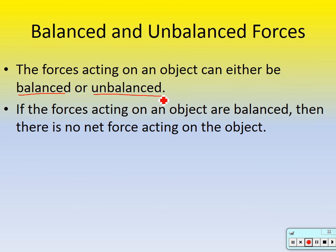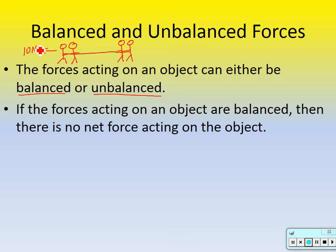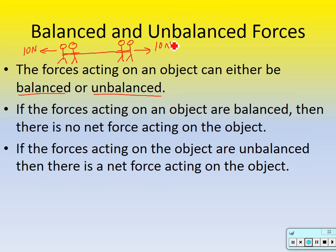If the forces acting on an object are balanced, then there's no net force acting on the object. Think of it like tug-of-war — if one team pulls with 10 newtons and the other team pulls with 10 newtons, the forces are balanced. So what would their motion look like? They're not going to move.